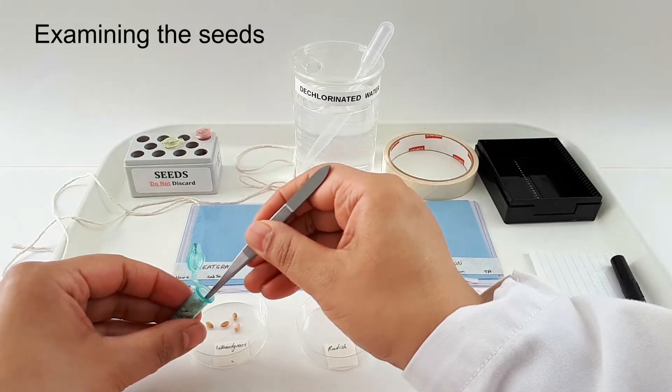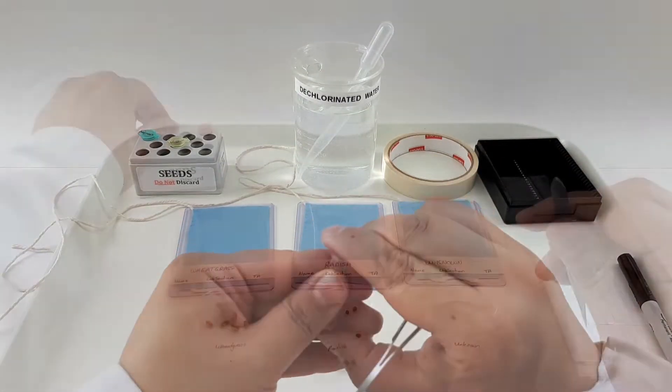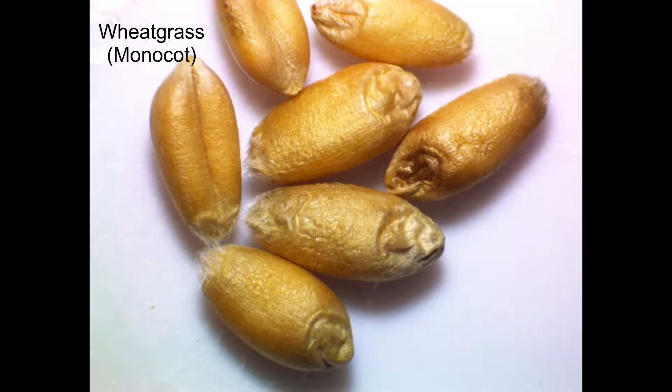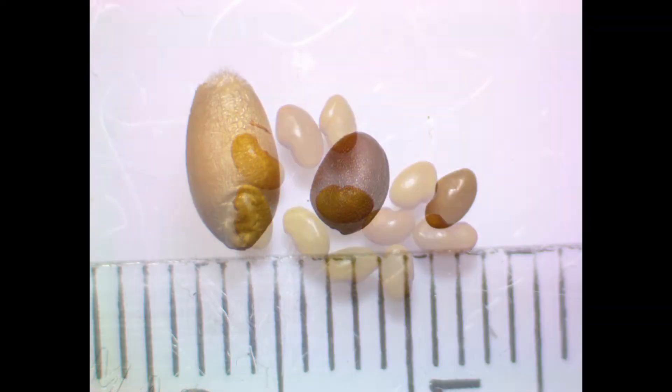Place five to six of each type of seed into the small dishes provided and take some time to examine them using the dissecting microscope. Try to distinguish between the external features of the monocot, the eudicot, and the unknown seeds.